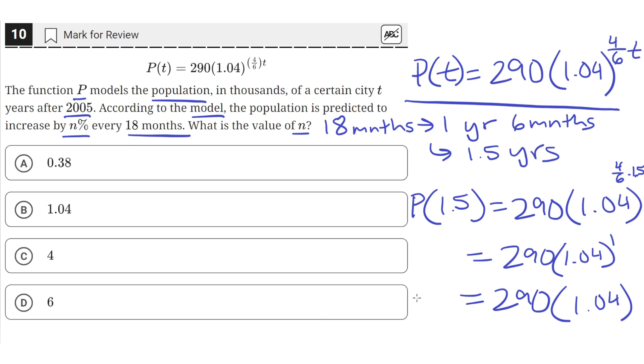And so this is how much the population changes after 1.5 years or 18 months. We started initially with 290,000 people, because at a t value of 0, the population P of t equals 290, since anything raised to the 0th power is just equal to 1. So at P of 0, the population is equal to 290,000.